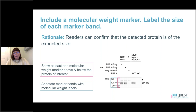Include a molecular weight marker so that readers can clearly see it on the blot image, and label each marker band. Here we have one marker band at the protein of interest, one above, and one below — all three labeled with the size of the proteins at those bands.